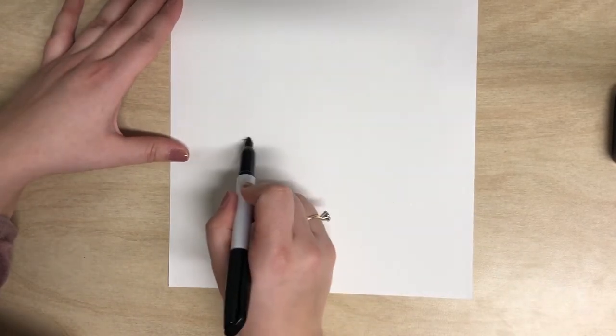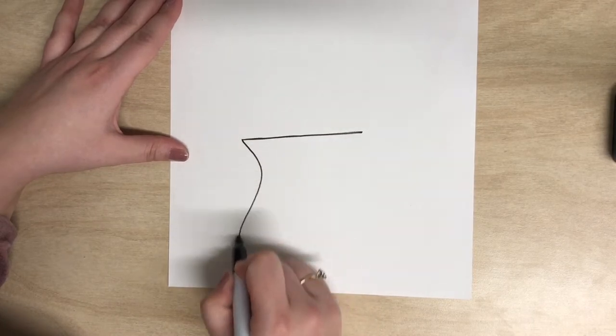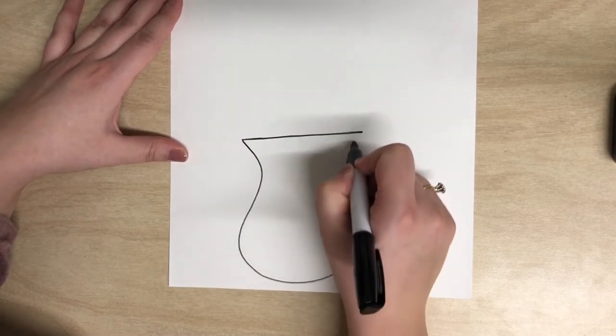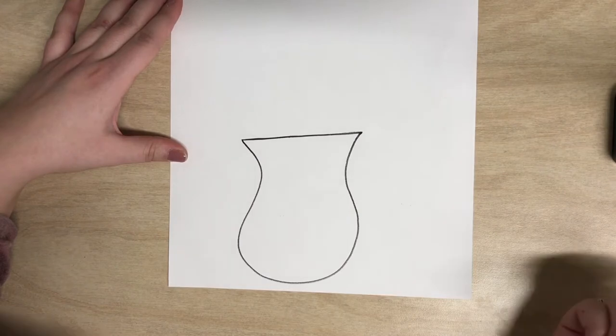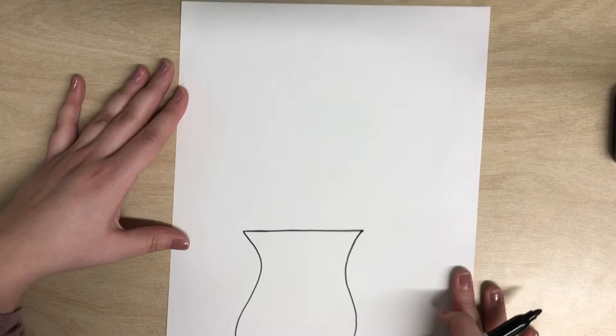I'm using Sharpie so you can see what I'm doing. You have your vase and your vase can be any shape that is up to you. Once you have your vase, you should still have a good chunk of paper from the middle up to draw your sunflowers.